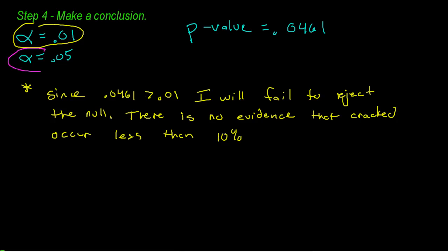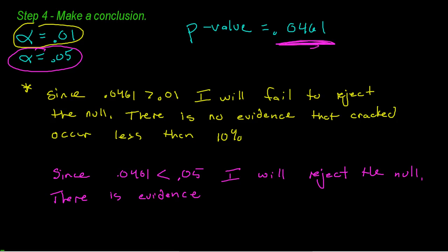I'm also going to write up the other answer, because if you use an alpha level 0.05, since 0.0461 is less than 0.05, I will reject the null. This means there is evidence that the proportion of cracked ingots is less than 10%.